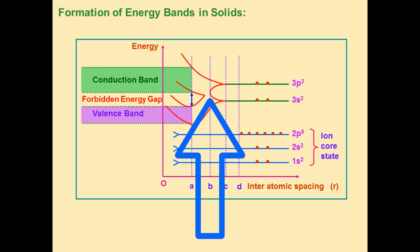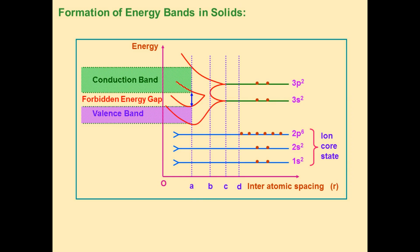When r equals OB, the interatomic distance decreases further and the energy gap disappears. The total 8n levels are formed for n atoms. Out of 8n levels, 4n are filled and 4n are unfilled. Observe this region carefully in the graph — when r equals OB the energy gap disappears, giving totally 8n levels with 4n filled and 4n unfilled.